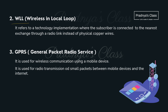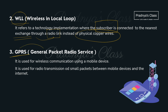The second wireless technology is WLL — Wireless in Local Loop. This is implemented where the subscriber is connected to the exchange through a radio link instead of physical copper wire. The third technology is GPRS — General Packet Radio Services — used in mobile devices for transferring data between the mobile device and the internet.